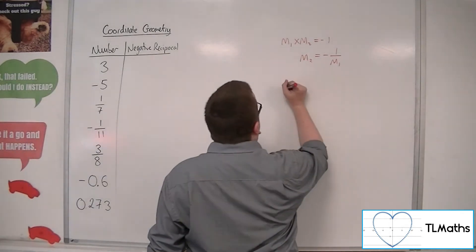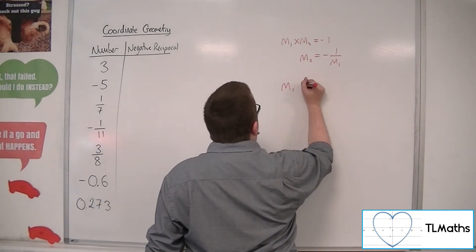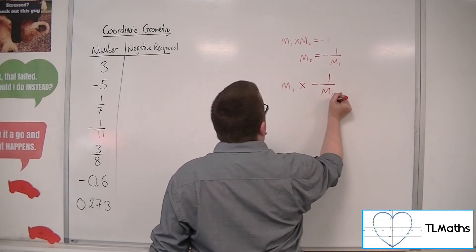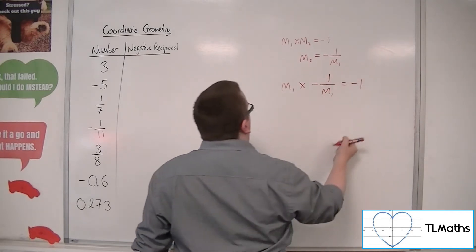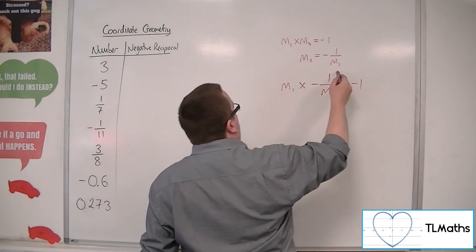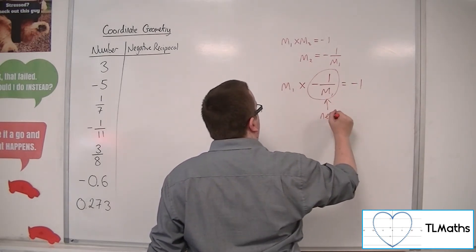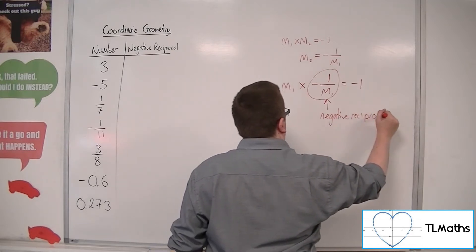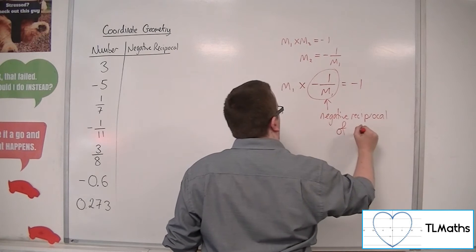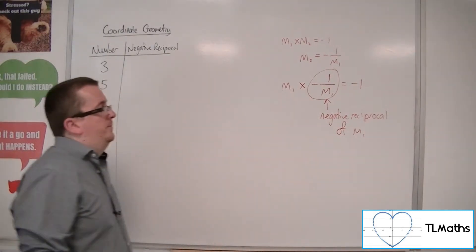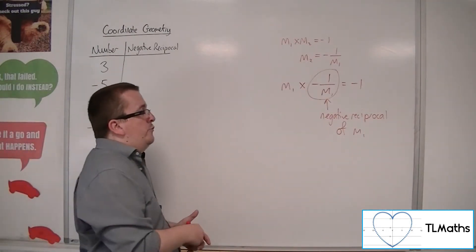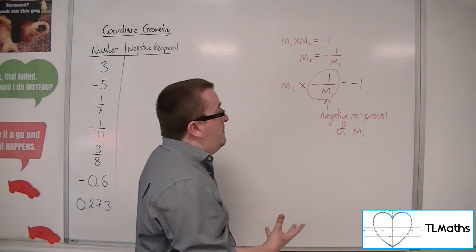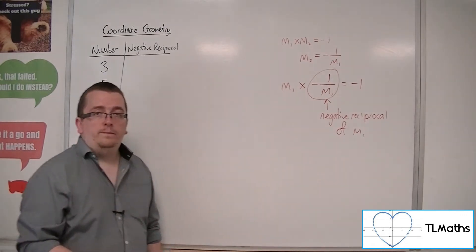So in other words, when I multiply a gradient by minus 1 over that number, I get minus 1. Now, this is what we refer to as the negative reciprocal of m1, of that gradient. So the negative reciprocal. Negative because there is a minus sign out the front, and reciprocal means 1 over.